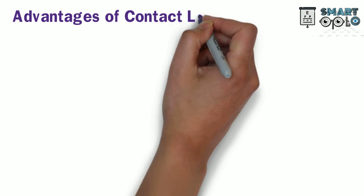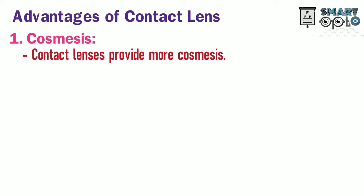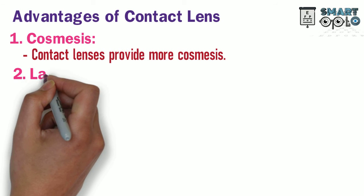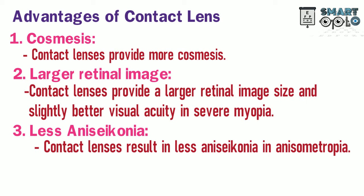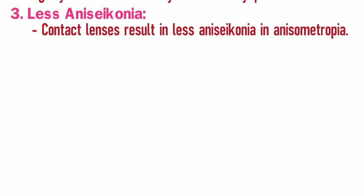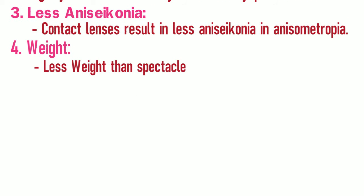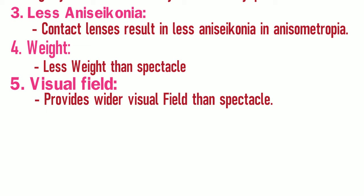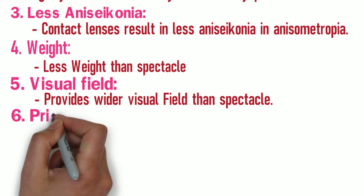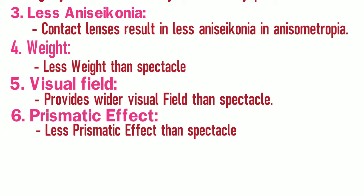Advantages of contact lenses: 1. Cosmesis: Contact lenses provide better cosmesis than spectacles. 2. Larger retinal image: Contact lenses provide a larger retinal image size and slightly better visual acuity in severe myopia. 3. Less aniseikonia: Aniseikonia is a condition where there is a difference in retinal image size between the two eyes; contact lenses result in less aniseikonia in anisometropia. 4. Weight: Contact lenses are lighter than spectacles. 5. Visual field: Contact lenses provide a wider visual field. 6. Prismatic effect: There is less prismatic effect than with spectacles.